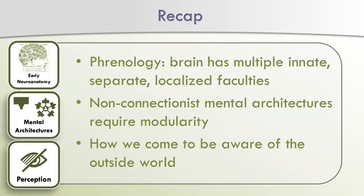The background for this: I want you to recall the lecture on early neuroanatomy, specifically the discussion of phrenology. This is the view that the brain has multiple innate, separate, localized faculties. Phrenology also thought that the brain influenced the skull's formation — that you could tell people's characteristics by feeling their skull — but that's not what we care about. Just this idea of innate, separate, and localized faculties. Also recall mental architectures: essentially any non-connectionist, or at least not completely connectionist, mental architecture is going to require some form of modularity — otherwise the entire system could break down very quickly. And then perception from last week, which will become very relevant soon.